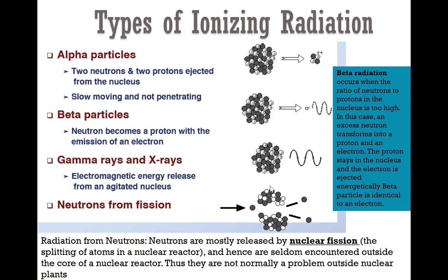There are various types of ionizing radiation: alpha, beta, gamma, x-rays, as well as neutron from fission. When we talk about radiation, we can mention alpha radiation or alpha particle, beta particle or beta radiation, as well as gamma rays and x-rays.